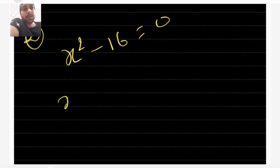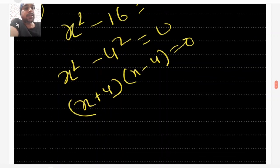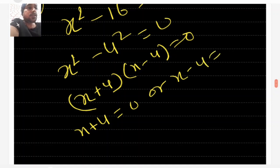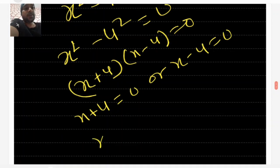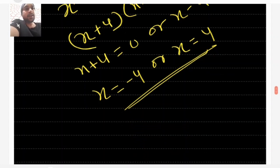How are you going to factorize this? It should be written as x² - 4² = 0, which can be written as (x + 4)(x - 4) = 0. So x + 4 = 0 or x - 4 = 0, giving x = -4 or x = 4. There are two answers.